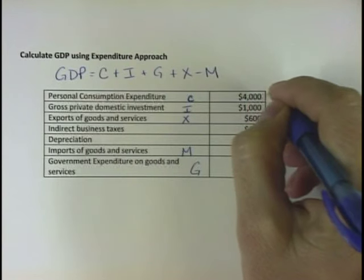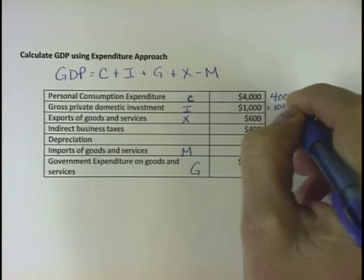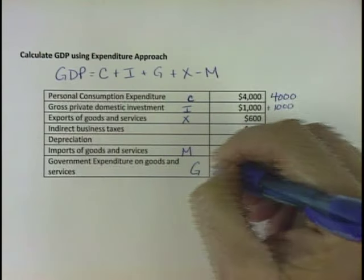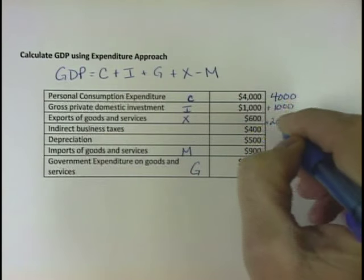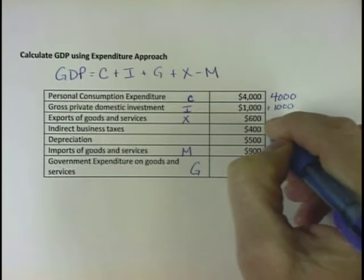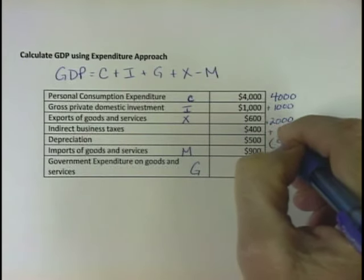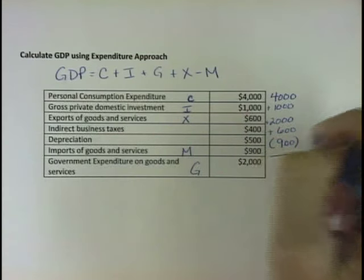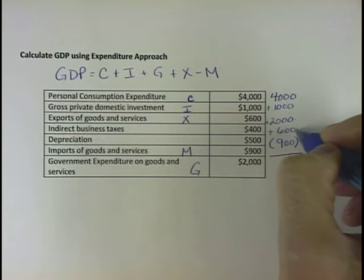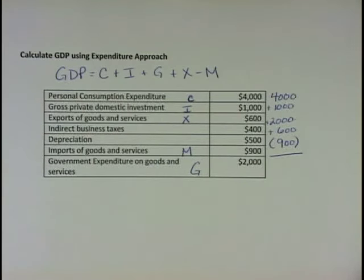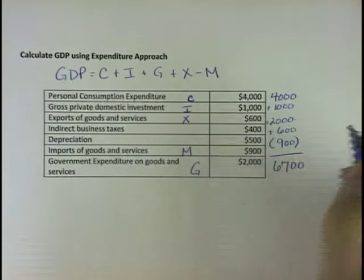So we have C which is 4,000. We add to that 1,000 for investment, 2,000 for G, and 600 for exports. Then we subtract 900 for imports. Adding 4,000 plus 1,000 plus 2,000 plus 600, then subtracting 900, gives us a GDP of 6,700.